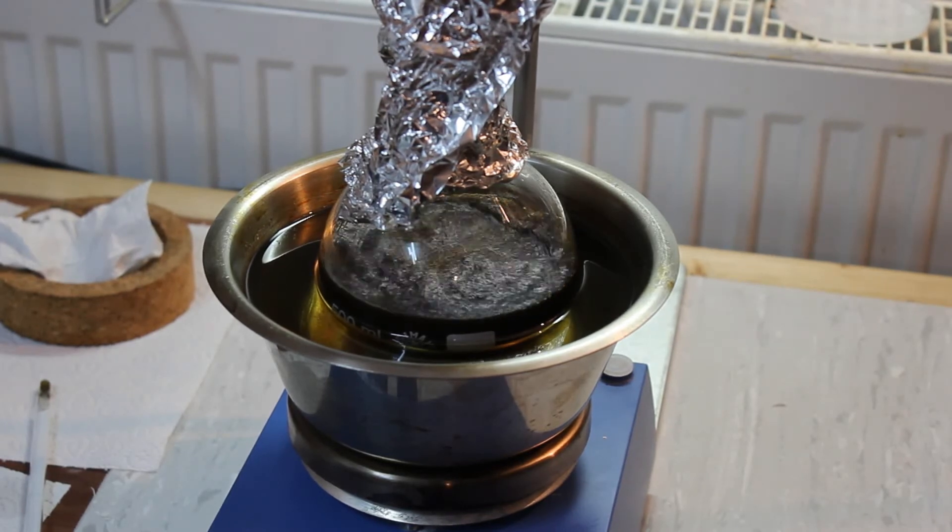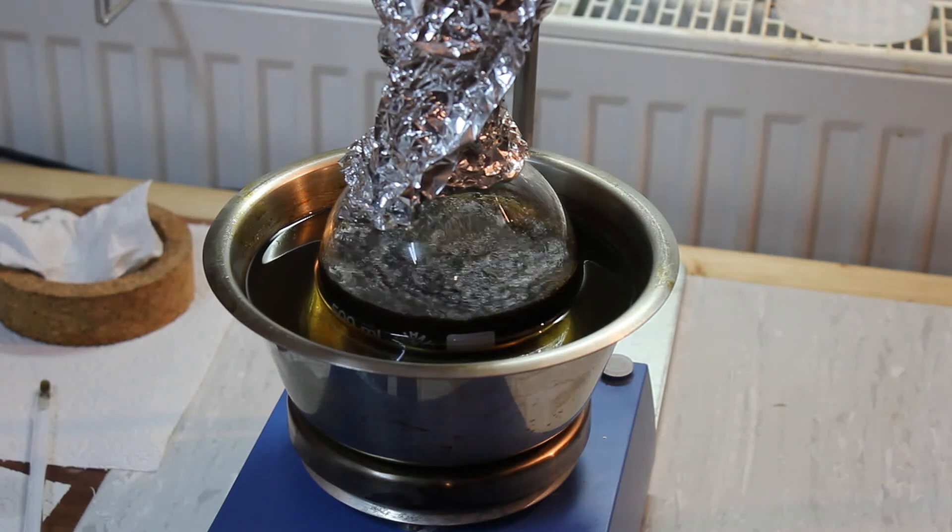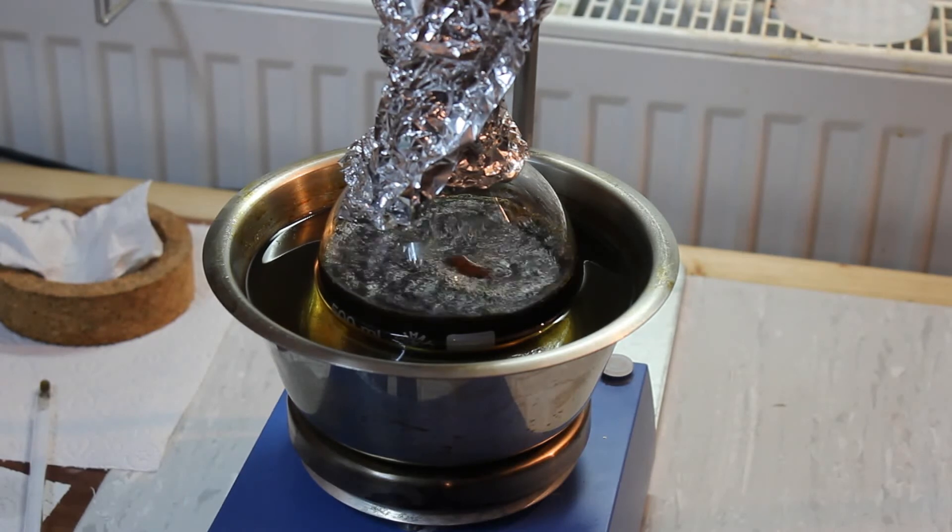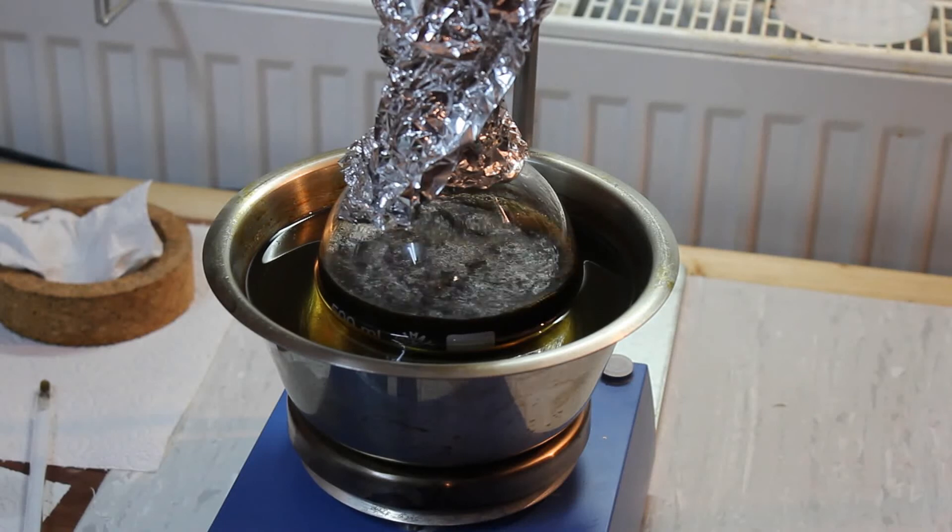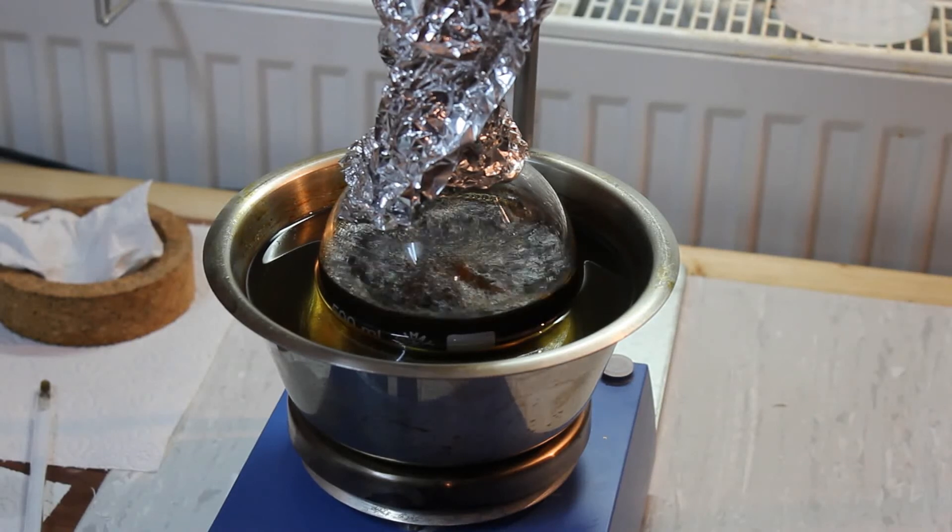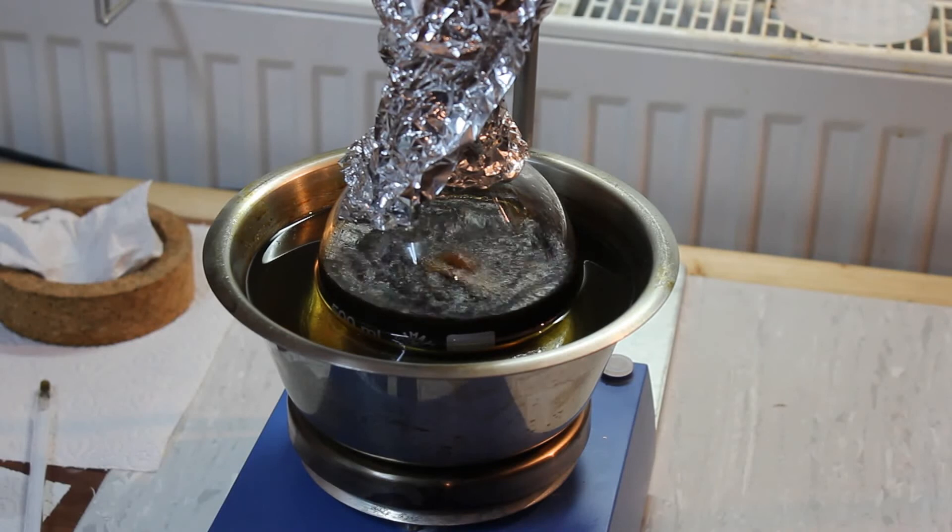The contents of the reaction flask have turned black and this is due to some side reactions. Sulfuric acid is a strong oxidizing acid. So it oxidizes something and it forms essentially carbon. So that's what you see here.